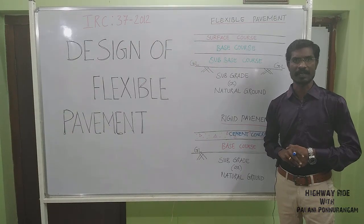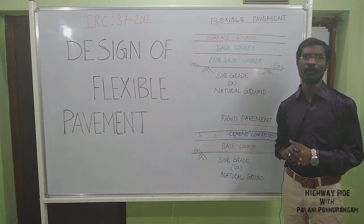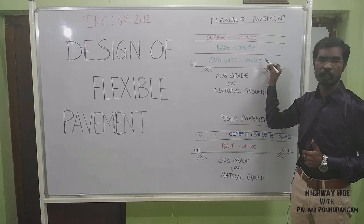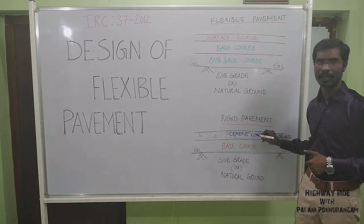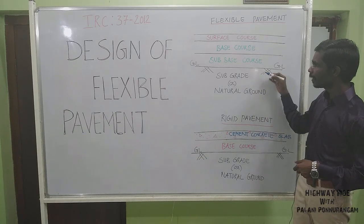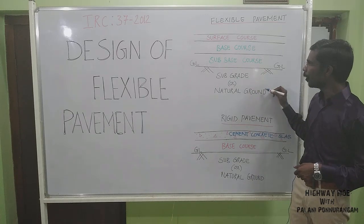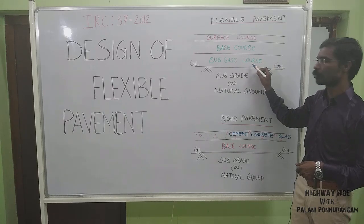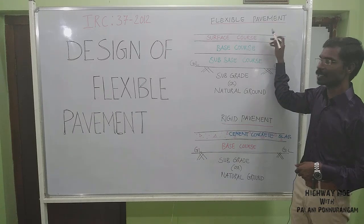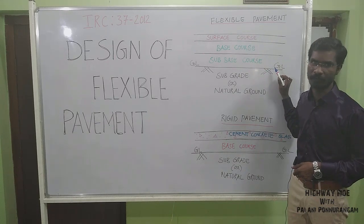Before going into the detailed design of Flexible Pavement, we need to understand the difference between Flexible Pavement and Rigid Pavement. Flexible Pavement is Asphalt or Bitumen Pavement. Flexible Pavement has different layers: the first is the Subgrade or Natural Ground Level, above which we lay the Subbase course, then the Base course, and finally the Surface course as the topmost layer.